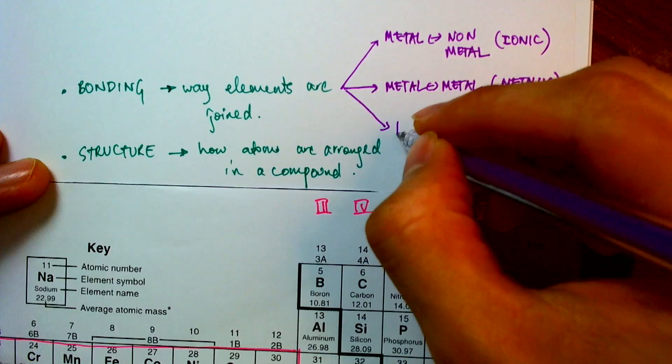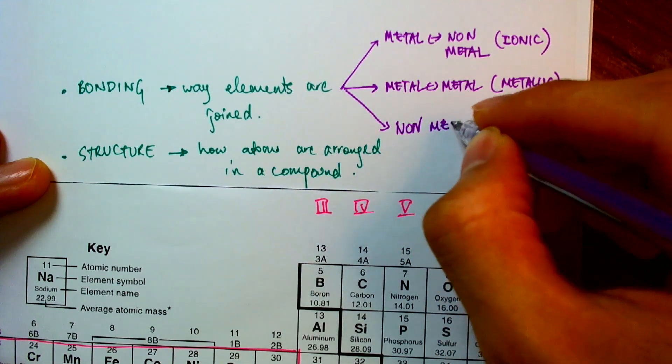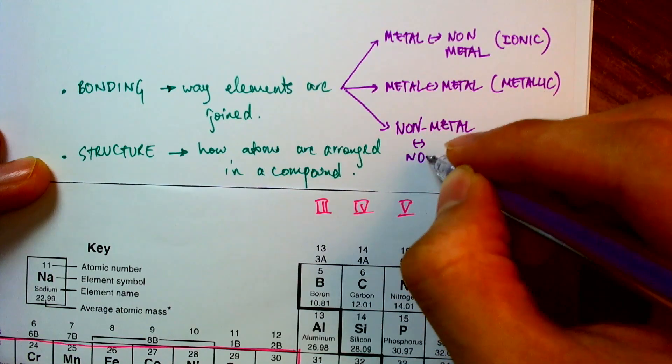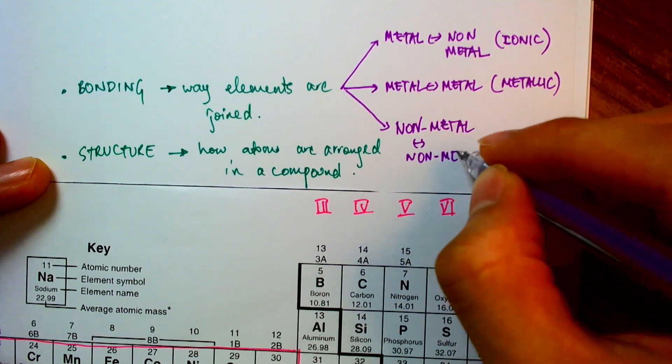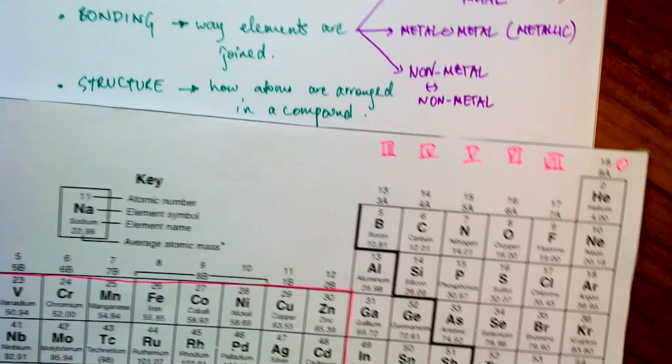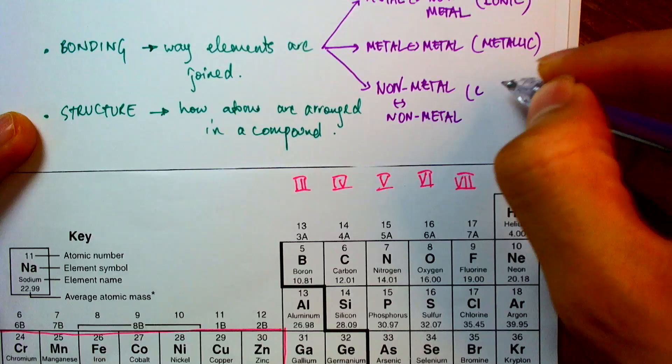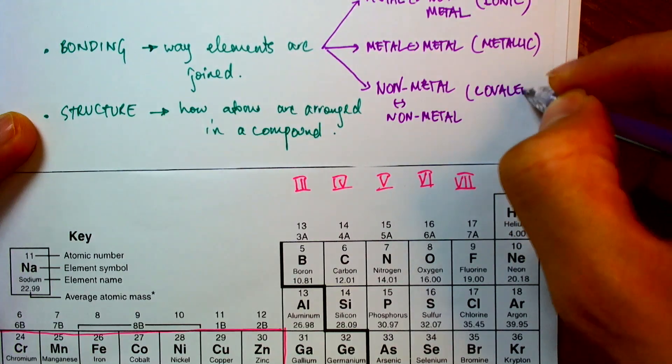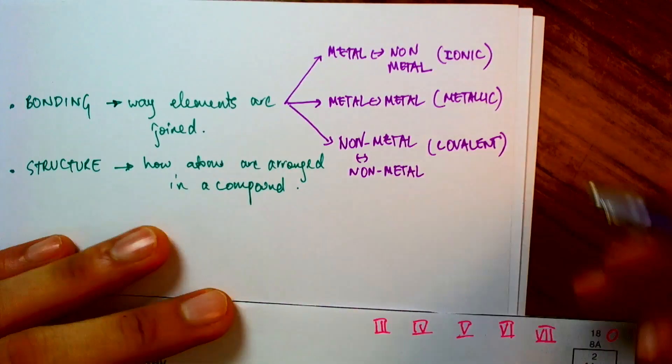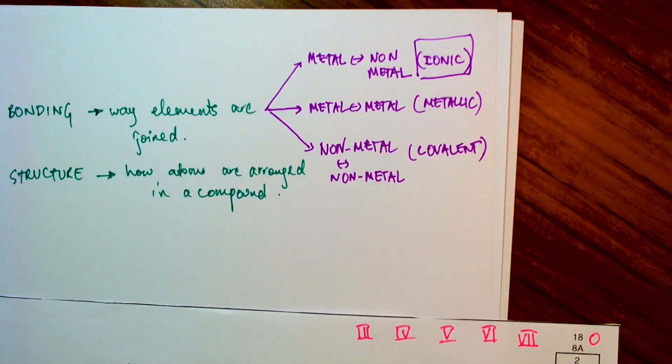appropriately, and then the third possibility is a bonding between a non-metal and a non-metal. So that takes care of all three possibilities if we were to categorize the bondings based on interaction between metals and non-metals, and for this final type of bonding, we call that the covalent bonding. So in this video, I like in particular to look at the ionic bonding.